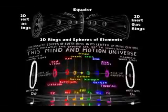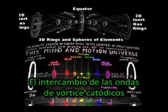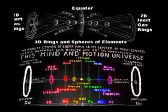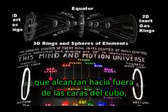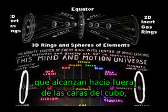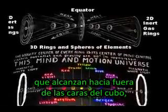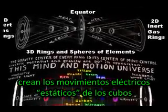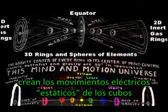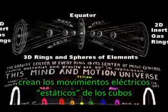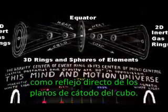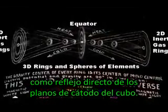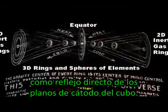The interchange of the cathode-vortex waves, which reach out from cube bases, creates the static electric motions of the cubes as direct reflections of the cubes' cathode planes.